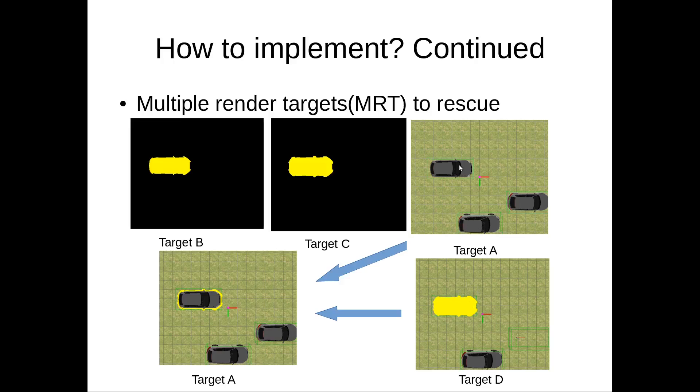So you blend the target A and target D here. When the stencil buffer is zero, you use the pixel values from target D. Otherwise, you use the pixel from target A. So in this way, you can get the final image with a very nice contour of the borders of the object.